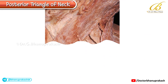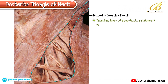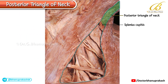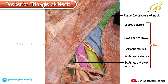This cadaveric image shows the deep contents and floor of the posterior triangle of the neck. The investing layer of the deep fascia has been stripped and reflected, revealing the muscular floor of the triangle. From above downward, we can identify the splenius capitis, levator scapulae, scalenus posterior, scalenus medius, and scalenus anterior muscles forming the floor.